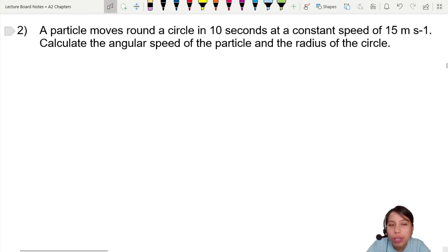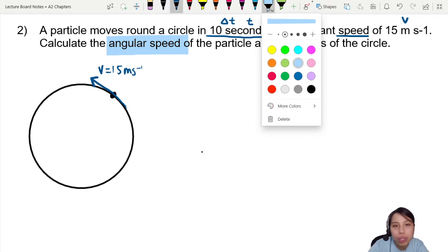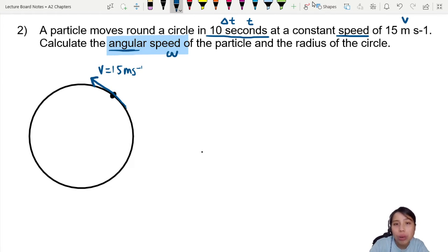Another one: a particle moving around in a circle in 10 seconds at a constant speed. No picture, so you draw your own. Draw a circle, put the particle here. Ten seconds is the time taken, delta T or just T. Constant speed, if they didn't say what speed, this is usually tangential speed v. Let me draw it like that. This is your v, which is 15 meters per second. Then later they want you to find angular speed, omega. How to find omega? There's one equation for omega: omega equals 2π over T.